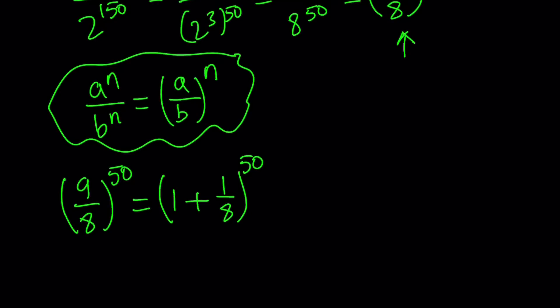Binomial theorem to the rescue. So whenever you have something larger than 1, you can always think about the binomial theorem, because 9 over 8 can be written as 1 plus 1 over 8, and then raise it to the 50th power. And now we can go ahead and use the binomial theorem. Now, don't worry about this whole thing, because there's going to be 51 terms. We're not going to expand the whole thing. We don't need to do that. You'll see in a little bit, we only need a couple terms.